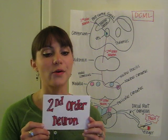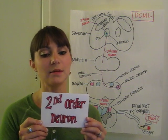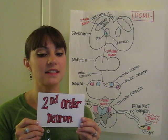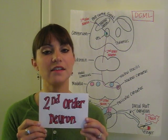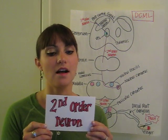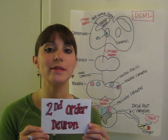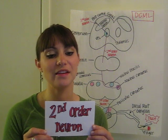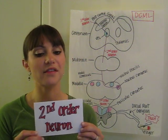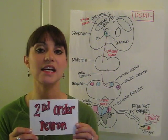Second order neuron starts in the medulla, decussates and ascends via the medial lemniscus, up through the cerebrum into the thalamus, where the VPL of the thalamus serves as its last stop.